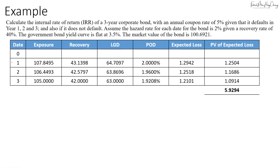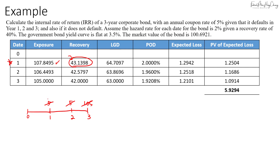First, let's calculate the IRR if the bond defaults in the first year. That means the amount you will recover is forty-three point one three nine eight. From year zero, you have year one, two, and three. You were supposed to receive cash flows of five, five, and one hundred and five, but since the bond defaults in year one, you wouldn't receive those later cash flows. The exposure in year one is one hundred and seven point eight five eight four nine five, and if it defaults you recover forty-three point one three nine eight, which includes the coupon. Your investment amount is one hundred point six nine two one.